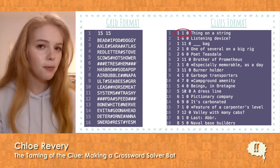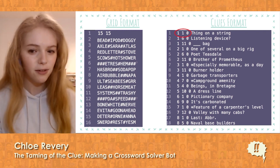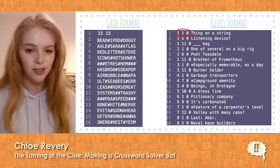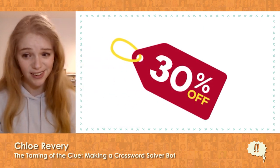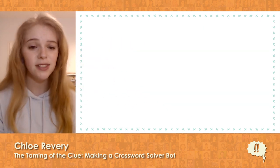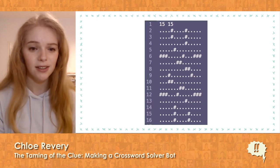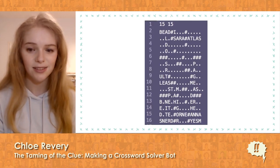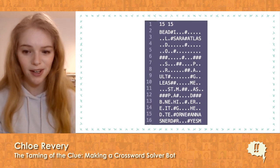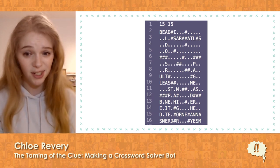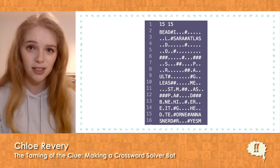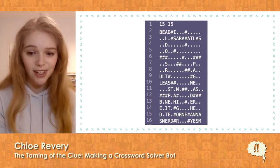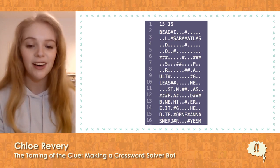So how much of the puzzle can be solved through this approach? It turns out to be a whopping 30%. So our puzzle has gone from this to this — much better. But we still have to solve the other 70%, and that means we're going to need a way to generate answers for the remaining clues.